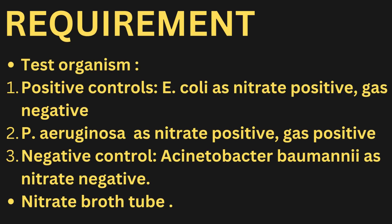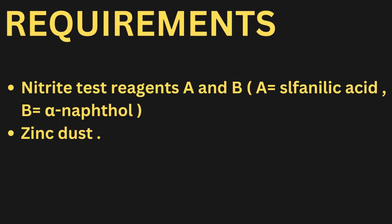Requirements: Test organism. Positive controls: E. coli (nitrate positive, gas negative); Pseudomonas aeruginosa (nitrate positive, gas positive). Negative control: Acinetobacter baumannii (nitrate negative). Nitrate broth tube. Nitrite test reagents A and B — A equals sulfanilic acid, B equals alpha-naphthylamine. Zinc dust.